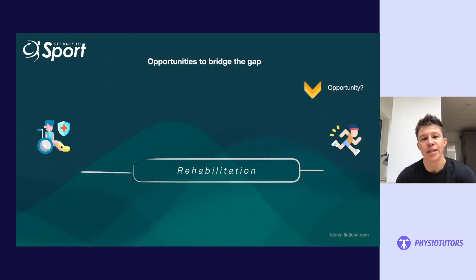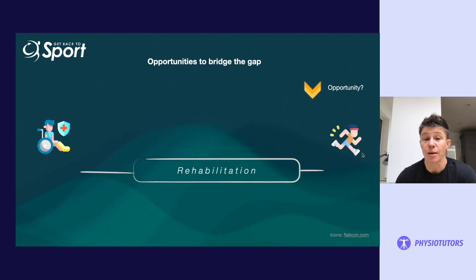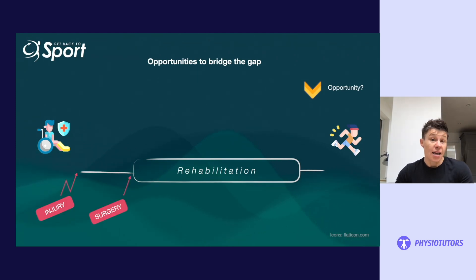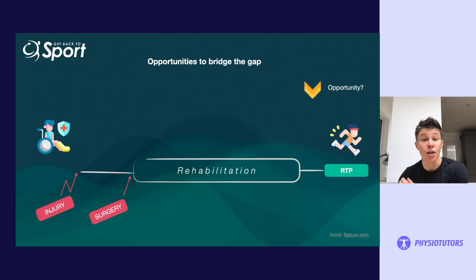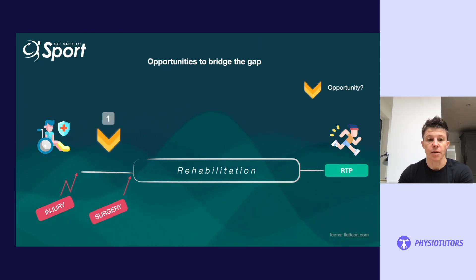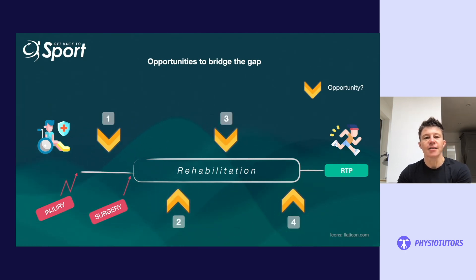You have many opportunities to bridge this gap — the gap really being from that individual who's injured to that individual returning to play, returning to sport, returning to competition. This is also applicable for individuals who are not athletes; they have to go back to be resilient against the normal loadings that their daily life presents. Along this rehabilitation journey, an individual might become injured, have a surgical intervention, go through a program of rehabilitation, and then be delivered back to their environment. You have a multitude of opportunities along here to optimise interventions in terms of outcome, to attenuate loss, and to improve performance development.